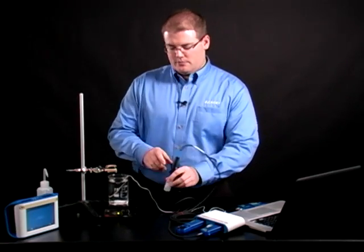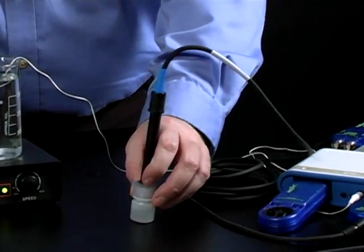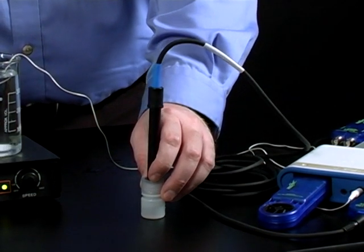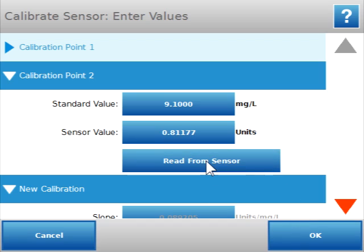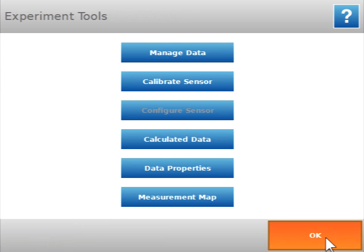After 30 seconds, place the bottle on a flat surface, and make sure there are no drops on the tip of the sensor. Then press read from sensor. Then click OK to return to your experiment.